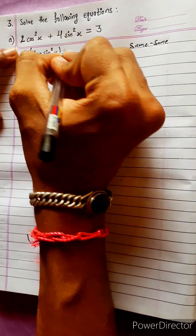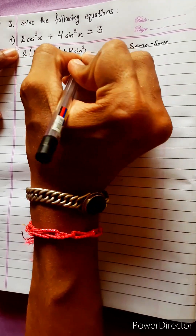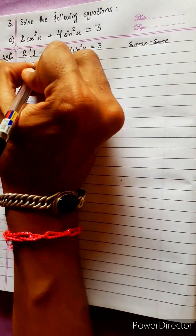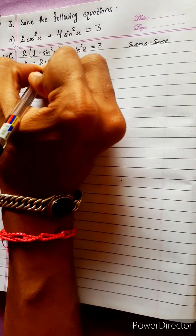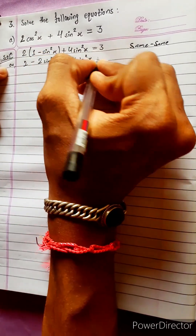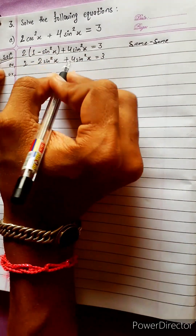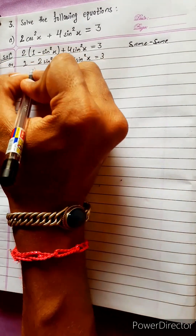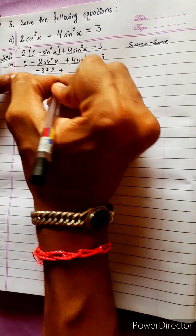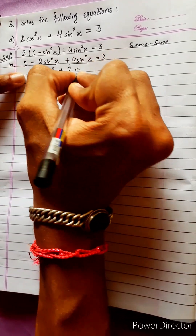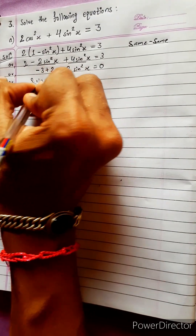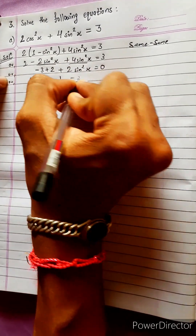Substituting cos²x = 1 - sin²x: two minus two sin²x plus four sin²x equals three. Simplifying: 2sin²x minus 1 equals 0.